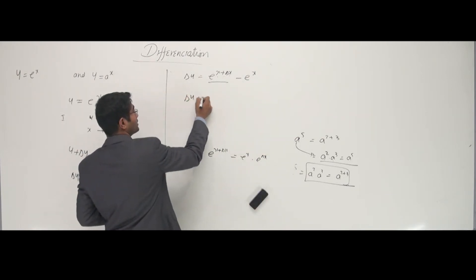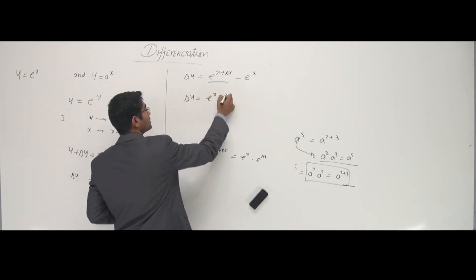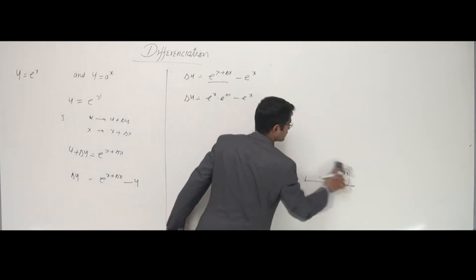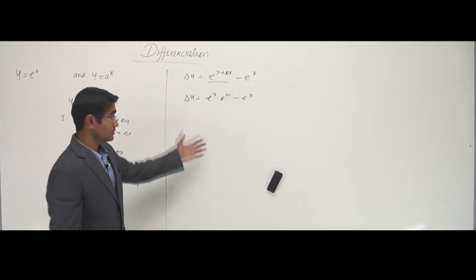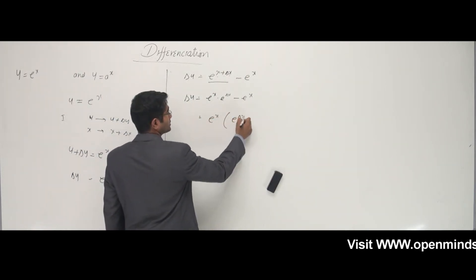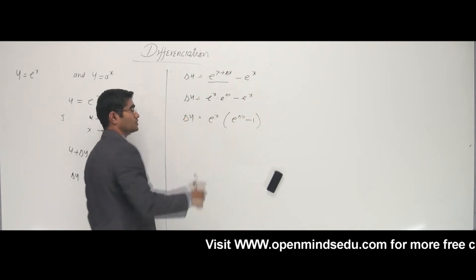That's what I'm trying to do here. If I use it, delta y is e power x into e power delta x minus e power x. Why am I doing this? So that I can take e power x common out. I can take e power x out, and I have e power delta x minus 1. That's all it is. This is my first stage.